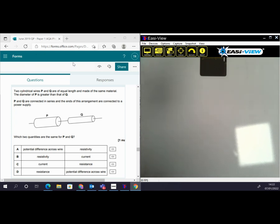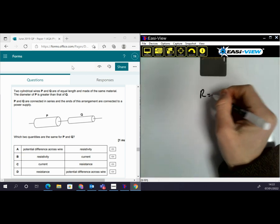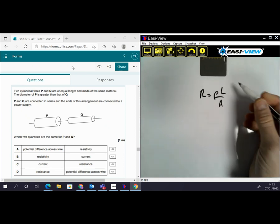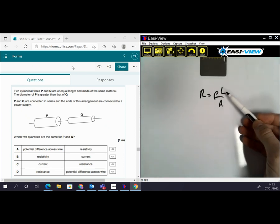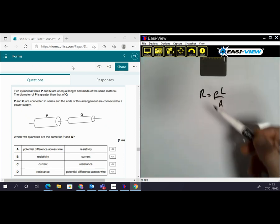So they're different cross-section areas, but they made the same material. The lengths are the same. So using R is rho L over A. If rho is the same and L is the same and A is different, then the resistances have to be different.